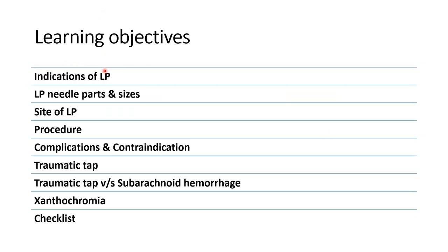The learning objectives for today's lecture are: indications, the LP needle, its parts and sizes, the site of lumbar puncture, the procedure, various complications and contraindications for LP, traumatic tap and the difference between this and subarachnoid hemorrhage and xanthochromia — which is also asked in the viva. Finally, I will show you the checklist.